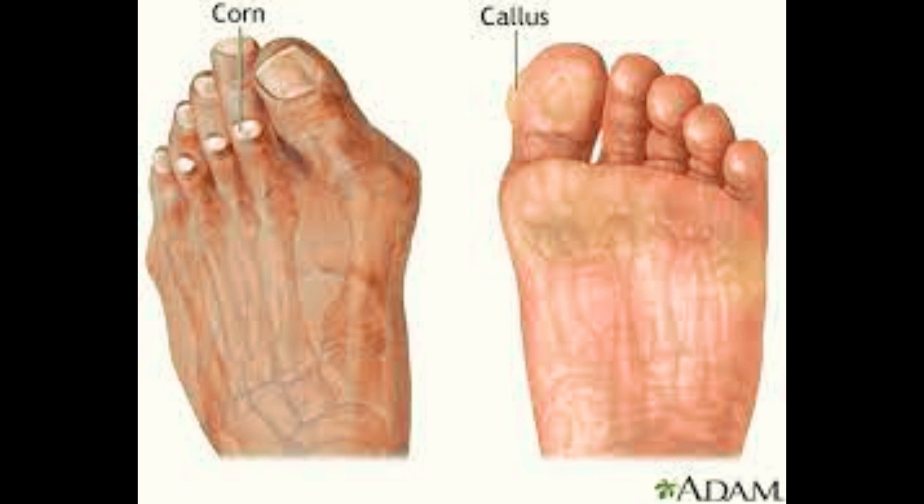Calluses and corns are thickened areas of skin that develop in response to repeated friction or pressure. While they can be effectively managed, they may not be completely cured since they tend to reoccur due to continued pressure or friction. However, the following approaches can help alleviate symptoms and reduce the frequency of callus and corn formation.